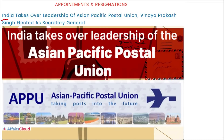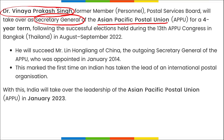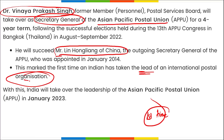India has taken over the leadership of the Asia Pacific Postal Union. Dr. Vinay Prakash Singh has been elected as the Secretary General. He will succeed Mr. Lin Hong Lang of China as Secretary General of the Asia Pacific Postal Union. This is the first time an Indian has led an international postal organization. His term as Secretary General will begin from January 2023.